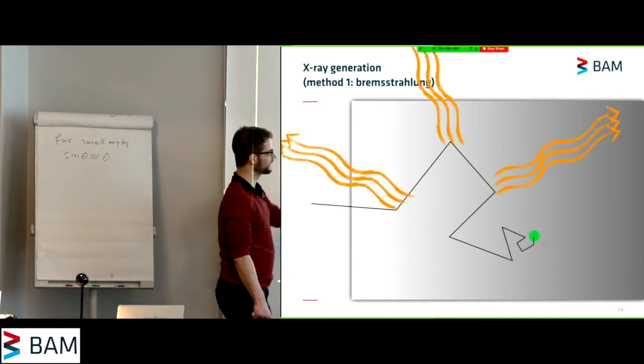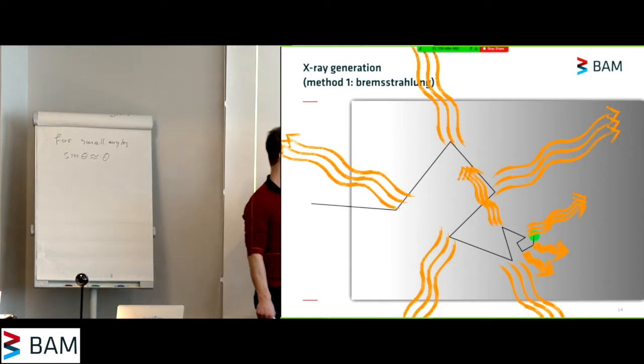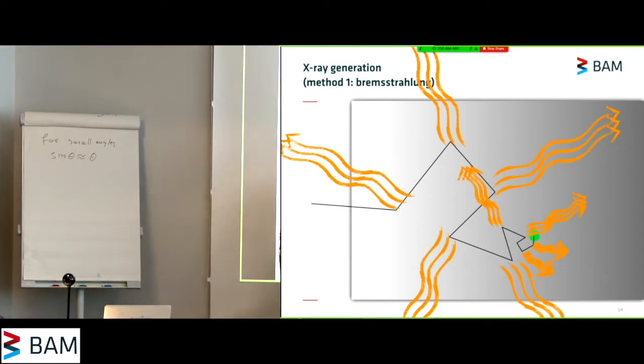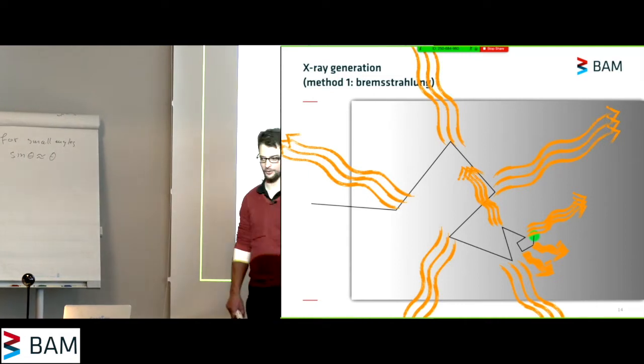Now, the energy of the x-rays that are created is dependent on the energy loss by the electron. So in the beginning we create high energy photons, and as it has bounced around more and more, it's lower and lower in energy.